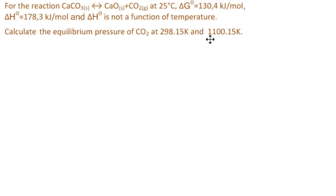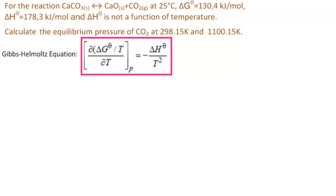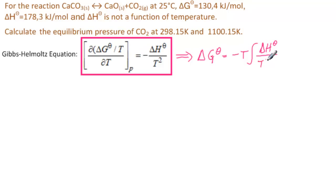For the second part, we need the equilibrium pressure of CO2 at 1100.15 K. We have not yet used the enthalpy value, and we will use it now via the Gibbs-Helmholtz equation. We write ΔG° = −T ∫(ΔH°/T²) dT.